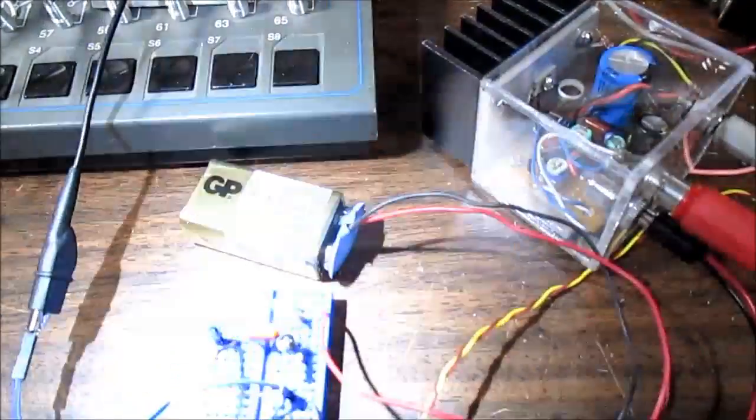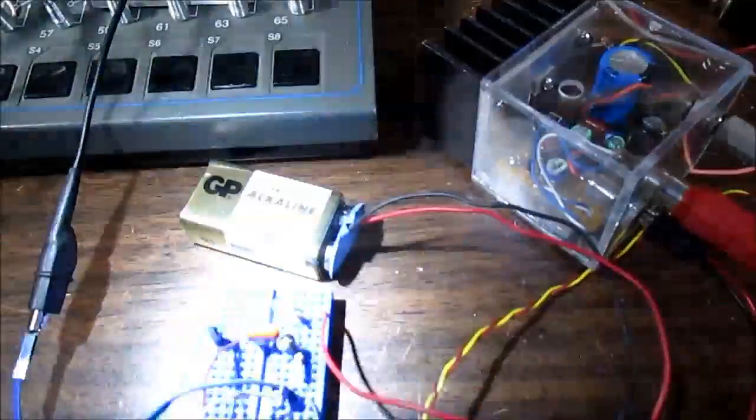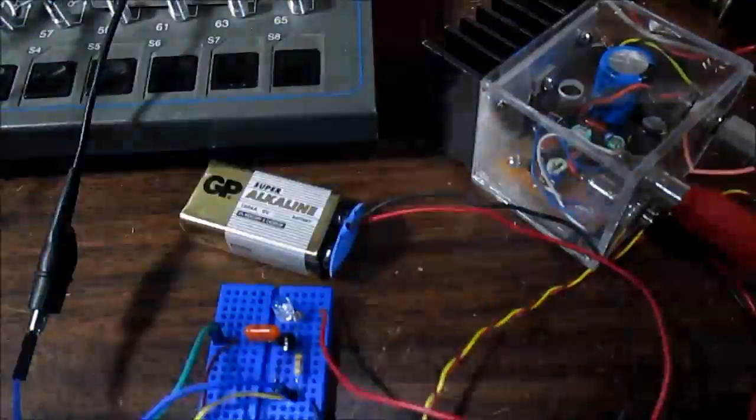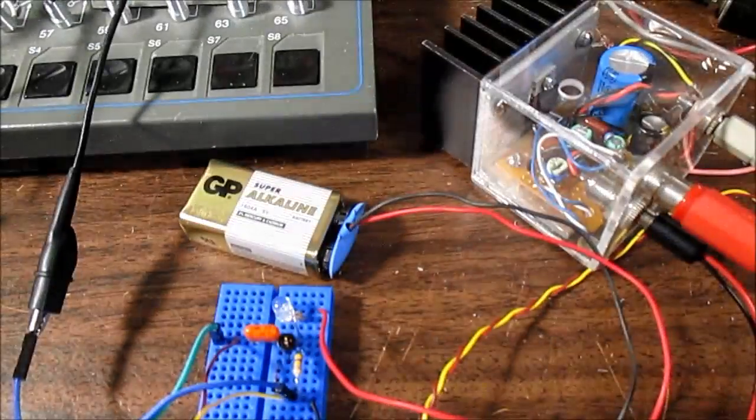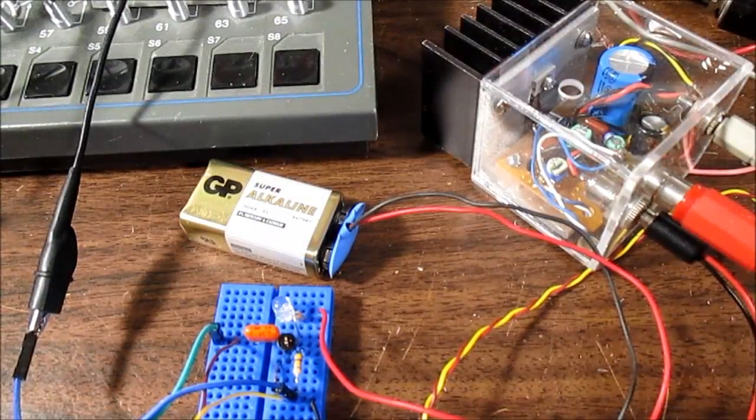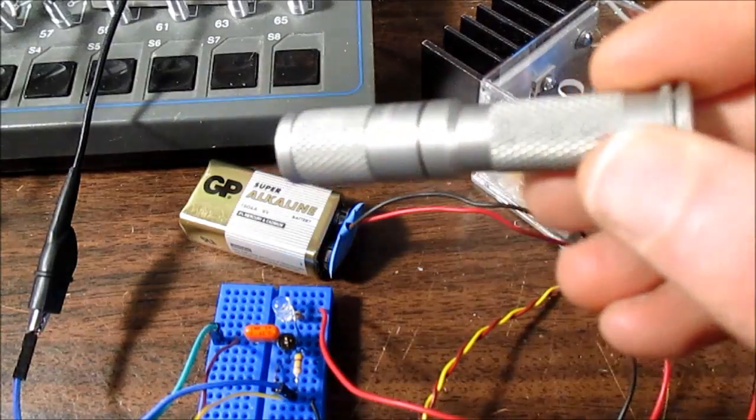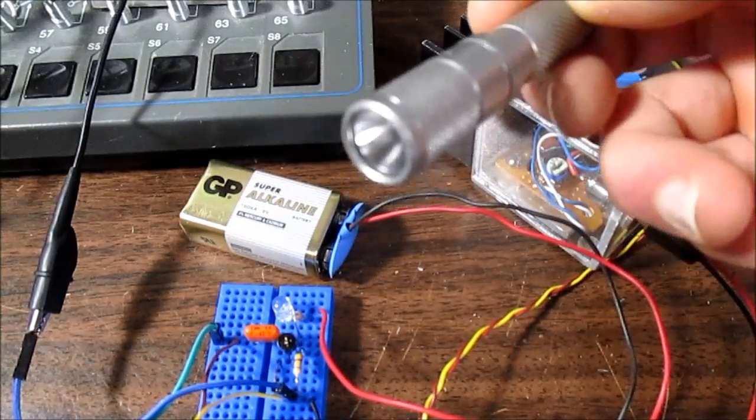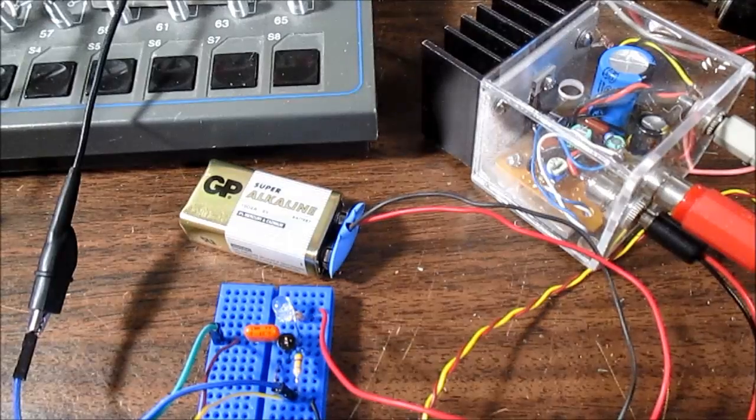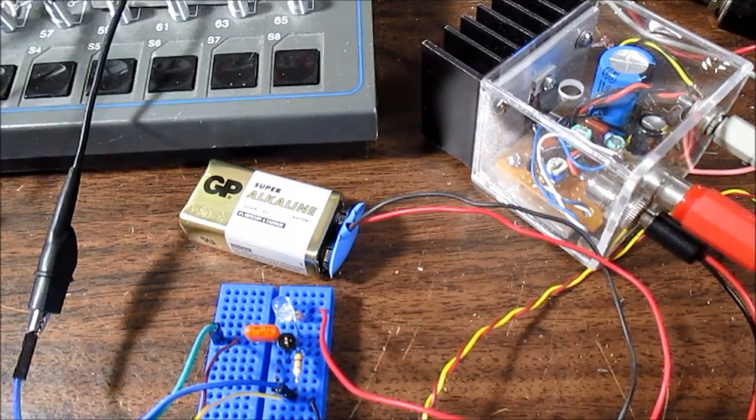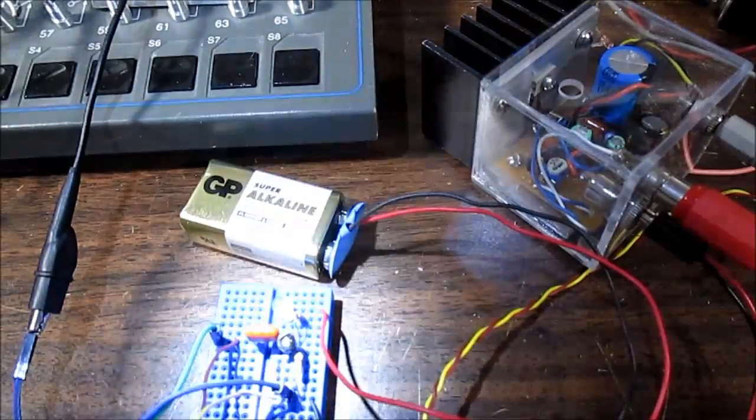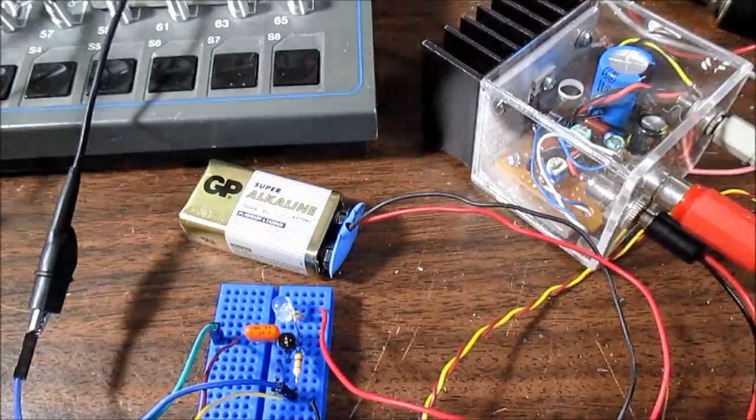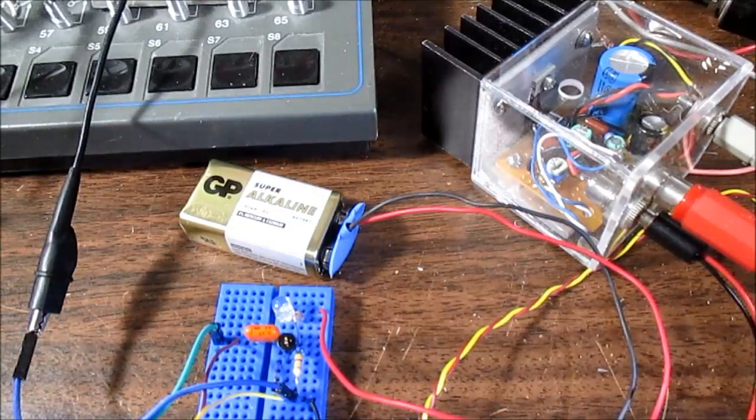So when I shine a light on it, you don't really hear much. But when I move it back and forth quickly, you can kind of hear that bass sound. But this light here, it uses pulse width modulation to control the brightness. So watch when I shine that on there.